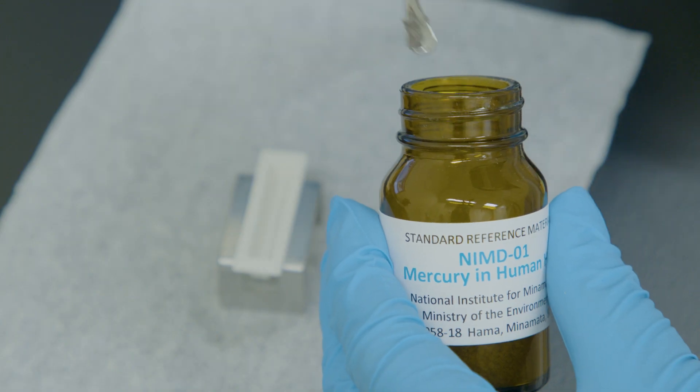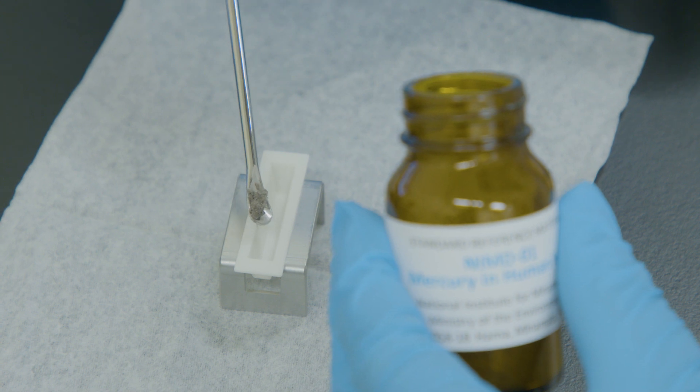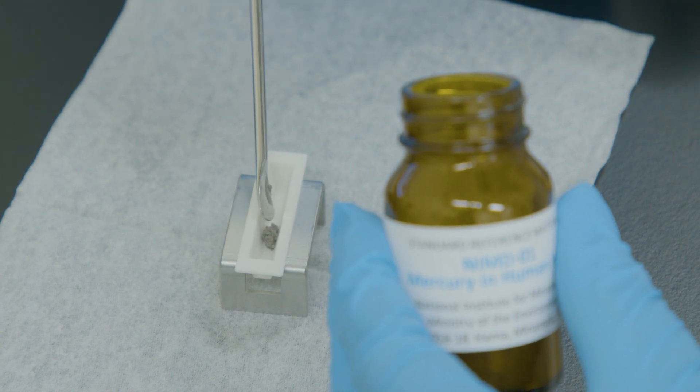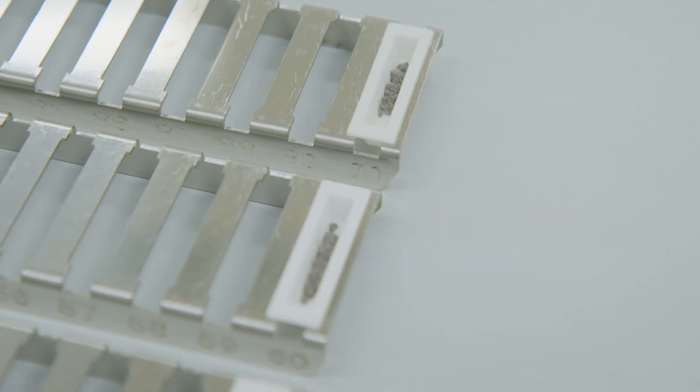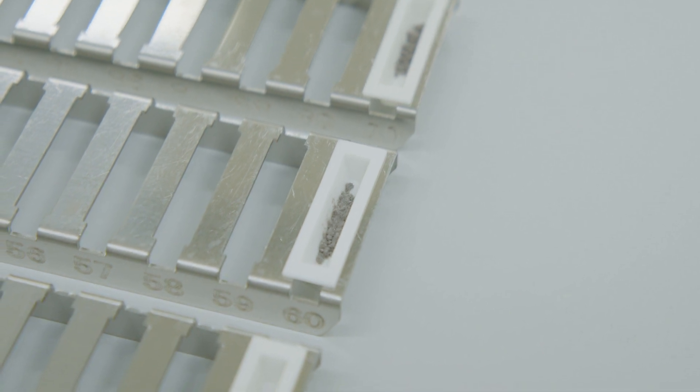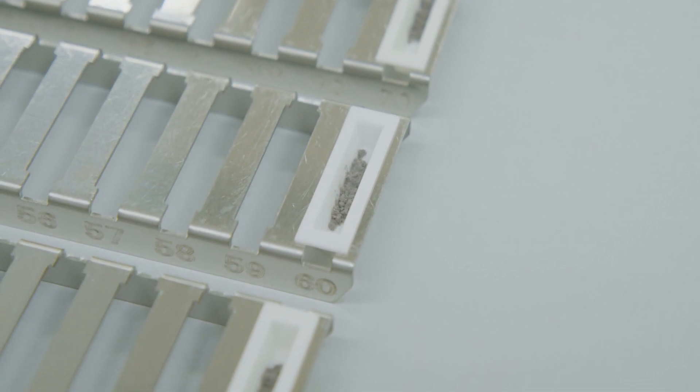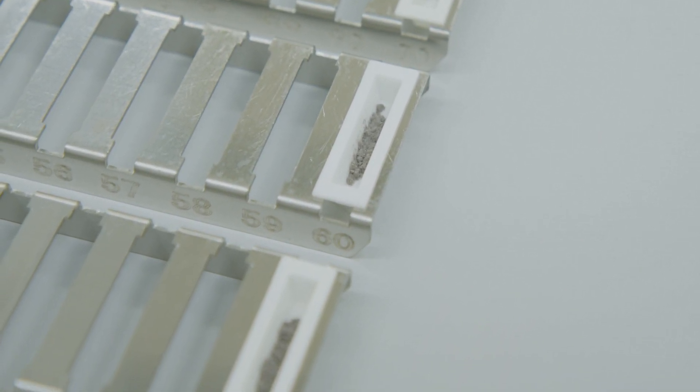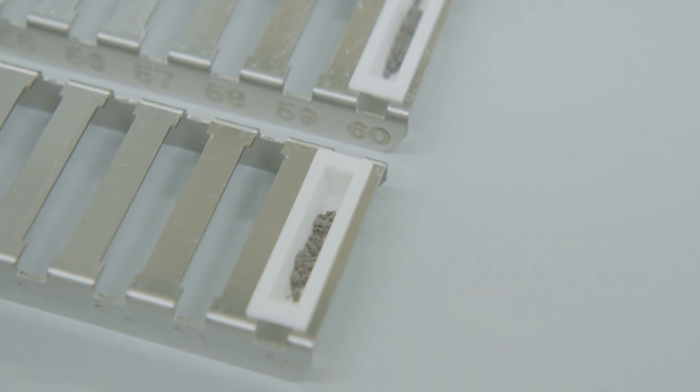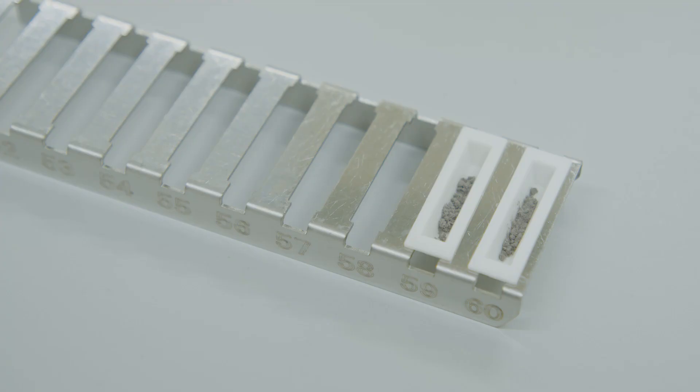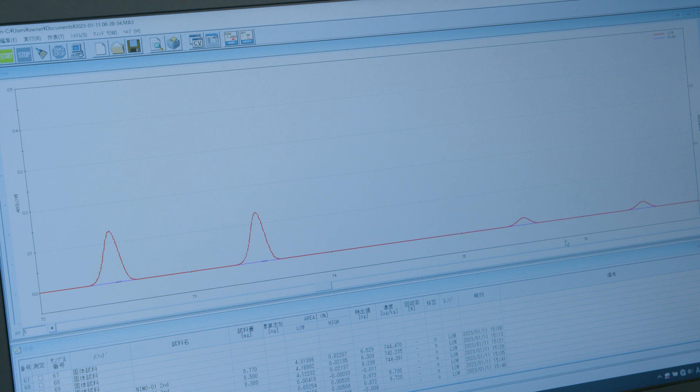It is also essential to perform a duplicate analysis to ensure the precision of our results. Inclusion of the same sample every 10 samples is generally recommended. If the sample size is too small for multiple analyses, we can use reference materials instead. Regularly measuring reference material or standard solutions will help confirm that the instrument's sensitivity is stable. To ensure the results are consistent daily, it is recommended to analyze the same sample, ideally a CRM.